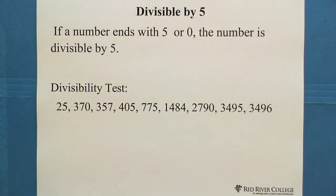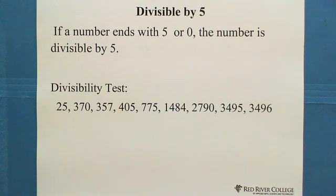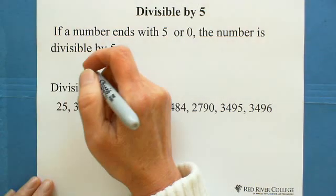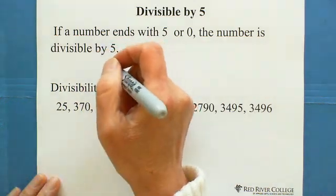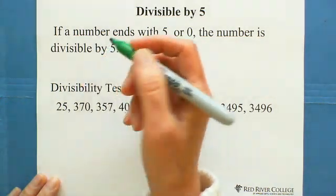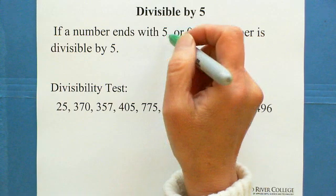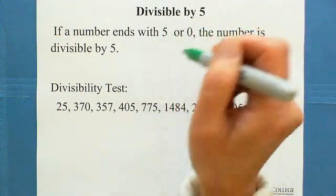Next, let's see the divisibility test for 5. If a number ends with 5 or 0, the number is divisible by 5. We only look at the last digit — if it is 5 or 0, it's divisible by 5. Any number of digits: even if you have millions or billions, as long as the last digit is 5 or 0, it is divisible by 5.